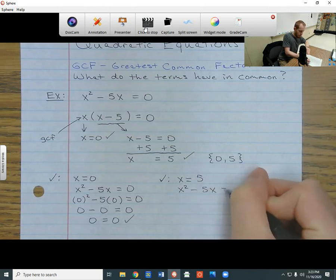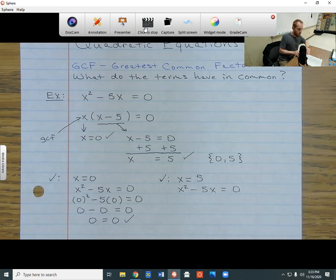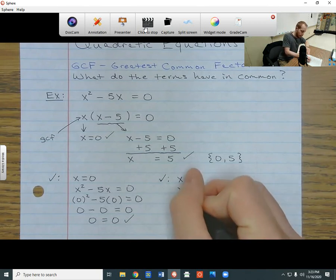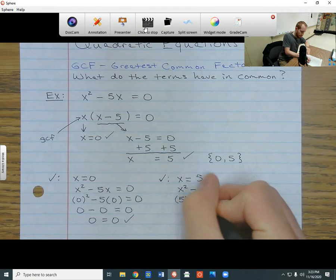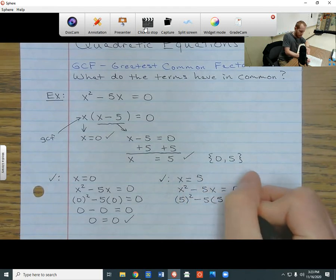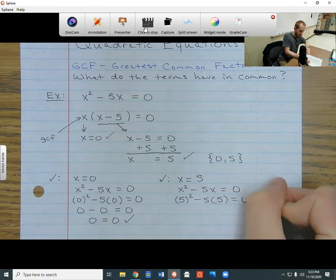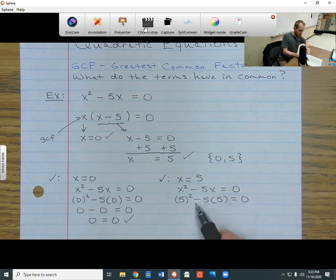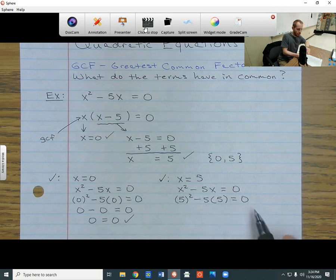And then what I'm going to do is everywhere I see an x inside here, I'm going to replace it with a five inside parentheses so I don't get confused. So I'm going to let this x be five, and I'm going to let this x be five. But everything else is going to stay the same. The minus is going to stay the same, the five is going to stay the same, and the equal zero is going to stay the same.